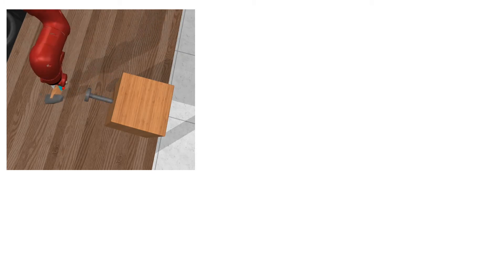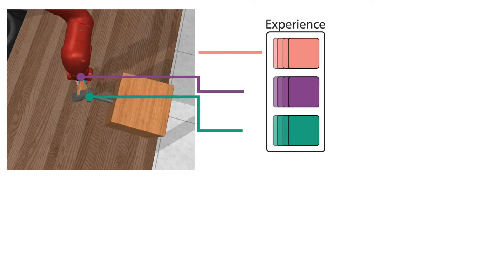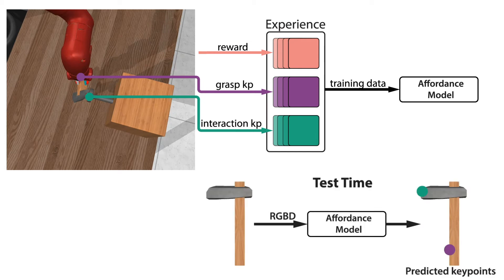To do this, we extract contact data from sampled trajectories and use it to train an affordance model that can predict grasp and interaction points from RGBD observations of novel tools.